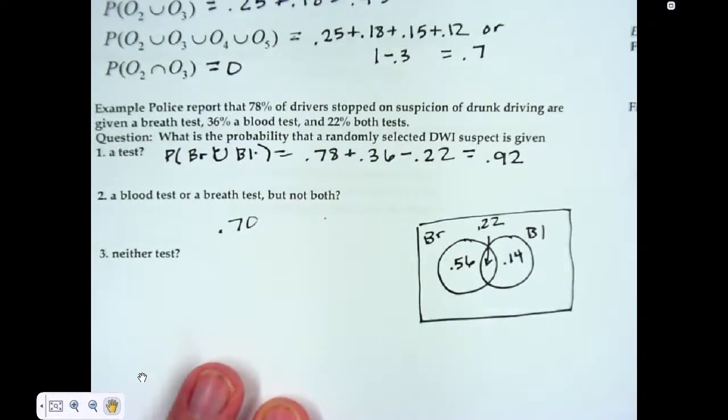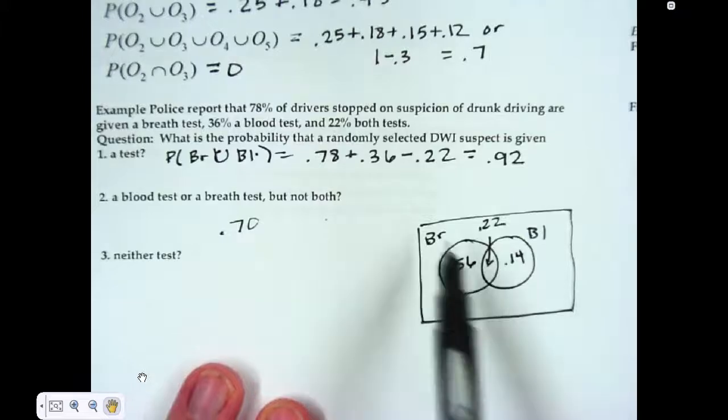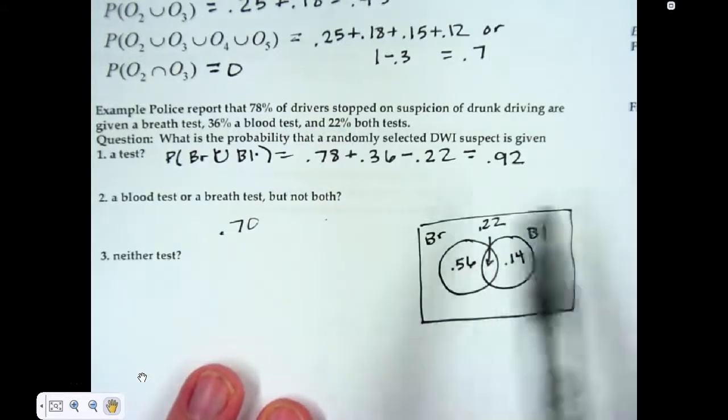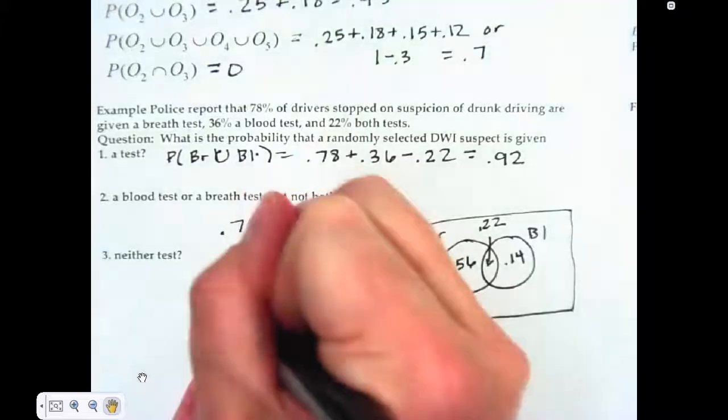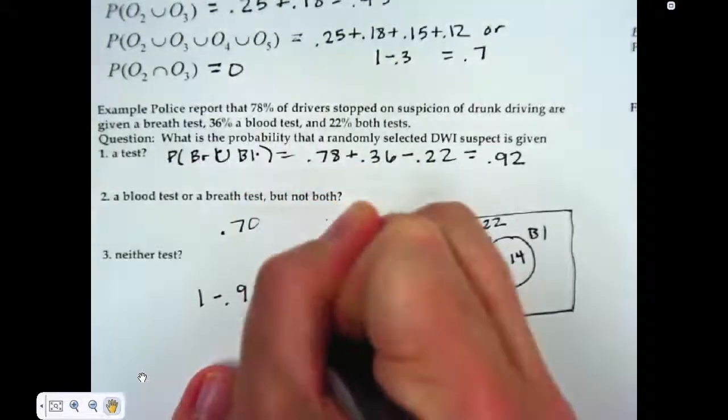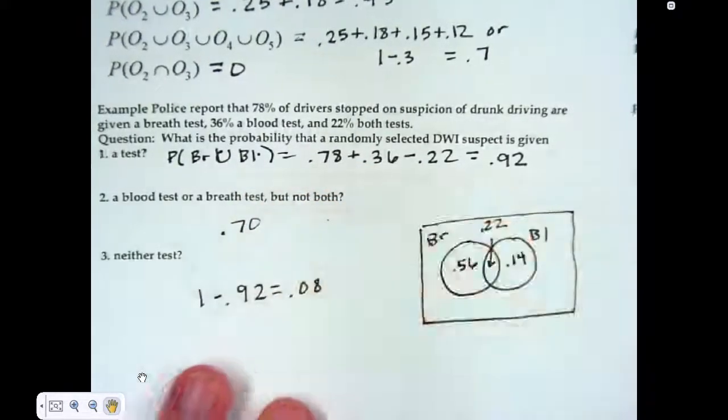Now, the last thing is the probability of neither test. That's outside the circle. Everything in here adds up to 92%. So for neither test, I'm going to take 1 minus 0.92, and that gives me 0.08.